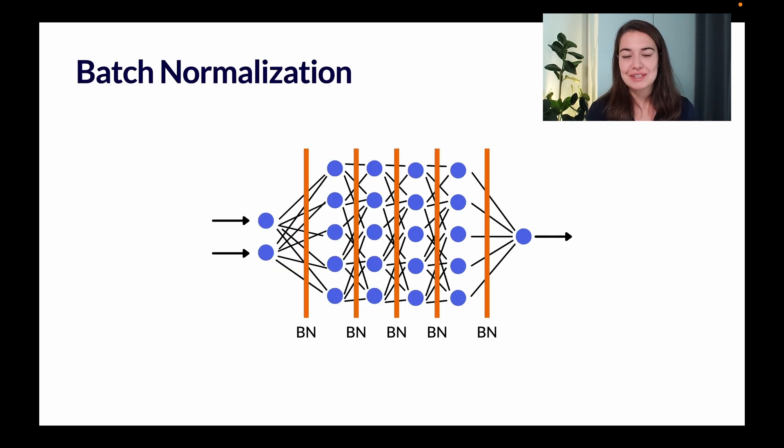So what we do with batch normalization is instead of only normalizing our inputs and then feeding the data into our network, we normalize all the outputs of all the layers in our network. So in this diagram, you can see we have our network and in between each layer, we have a batch normalization layer. So what it does is basically normalize our data and do a little bit more of a small trick on top of it. And then feed the output from the previous layer to the next layer.